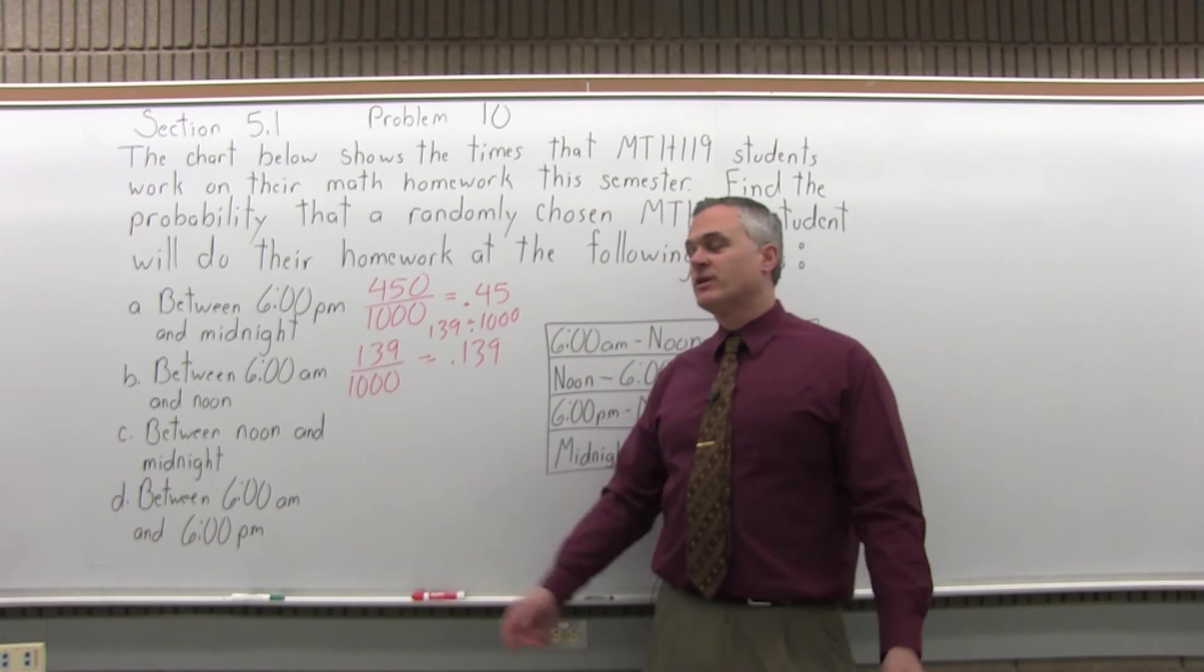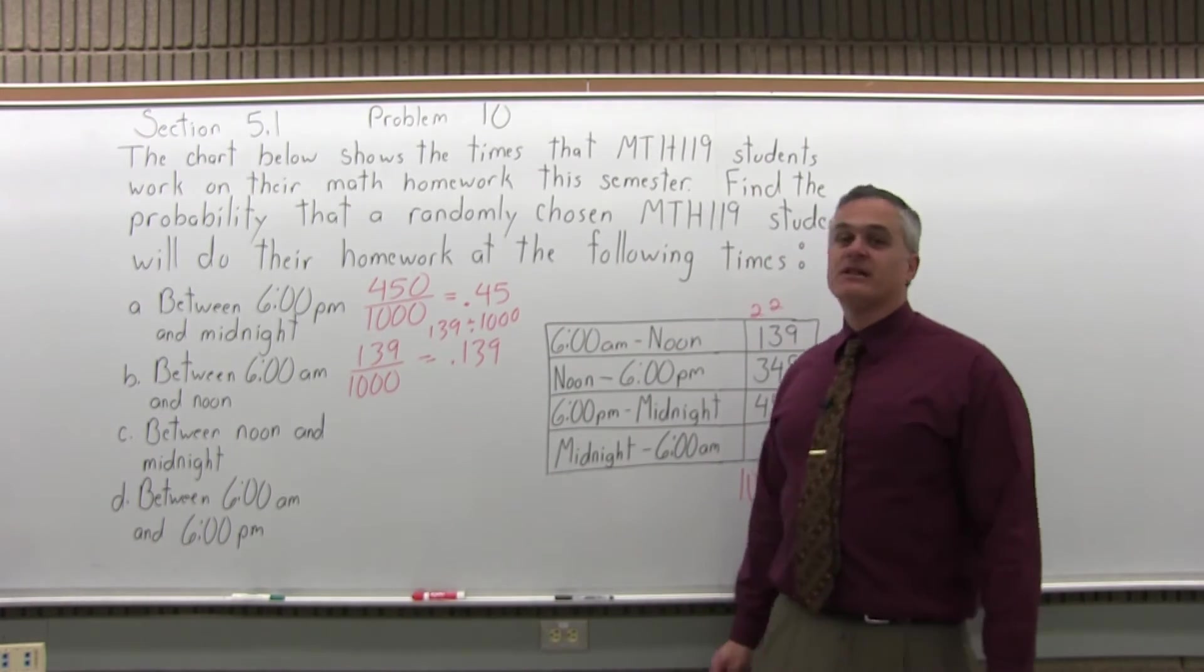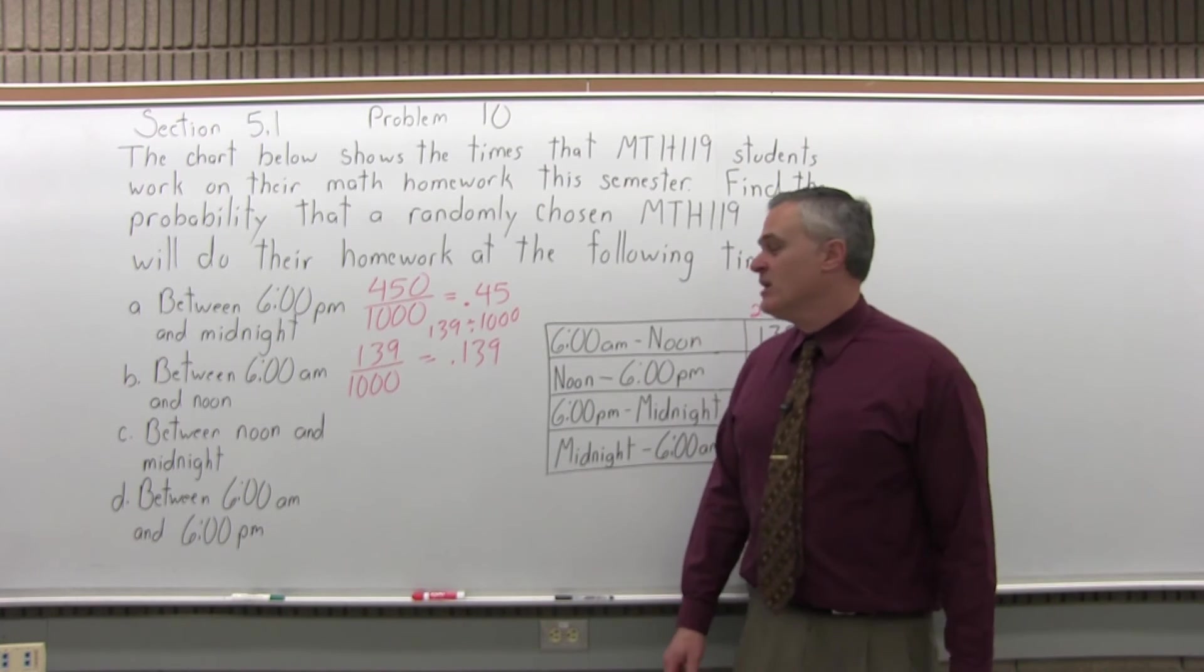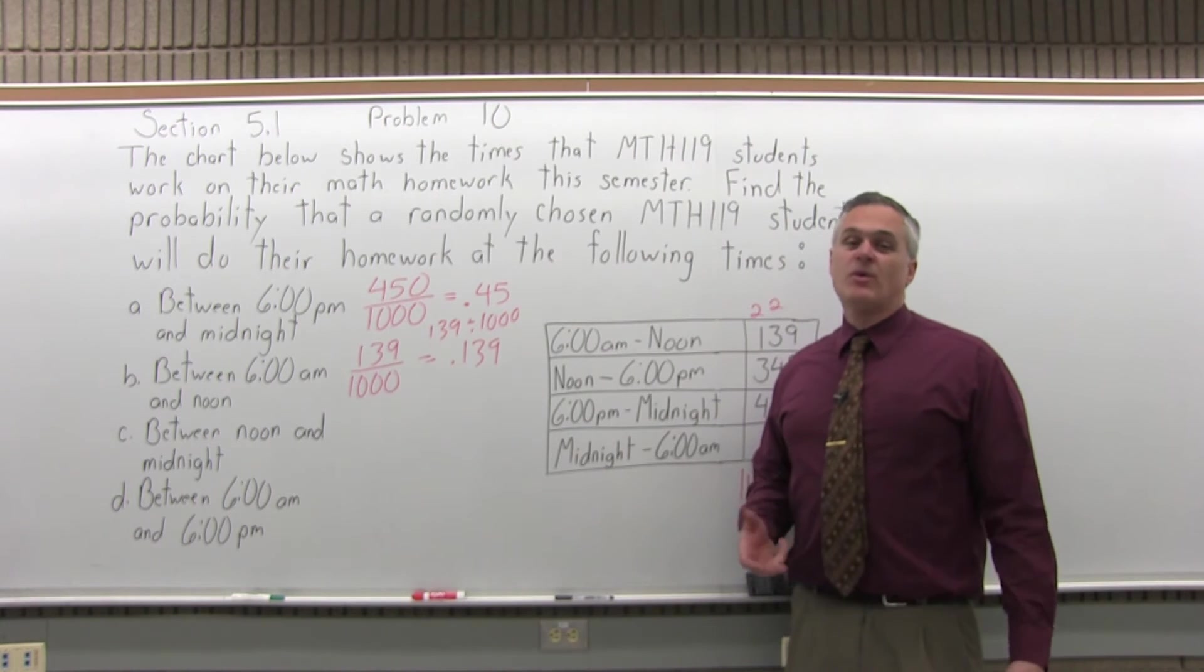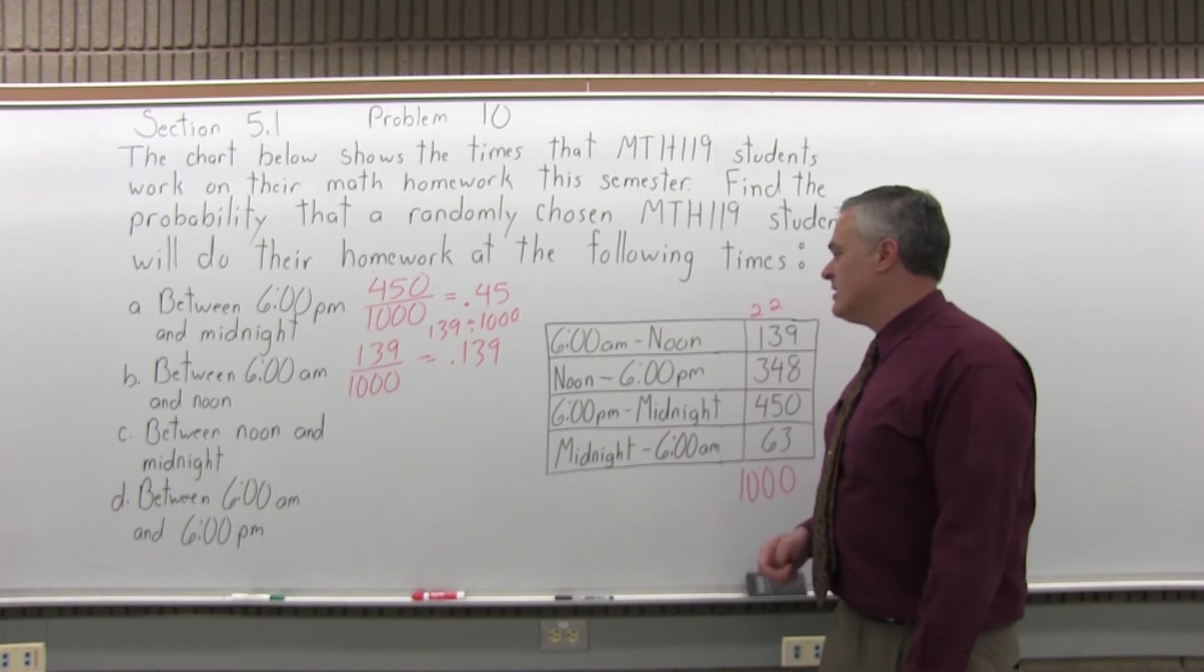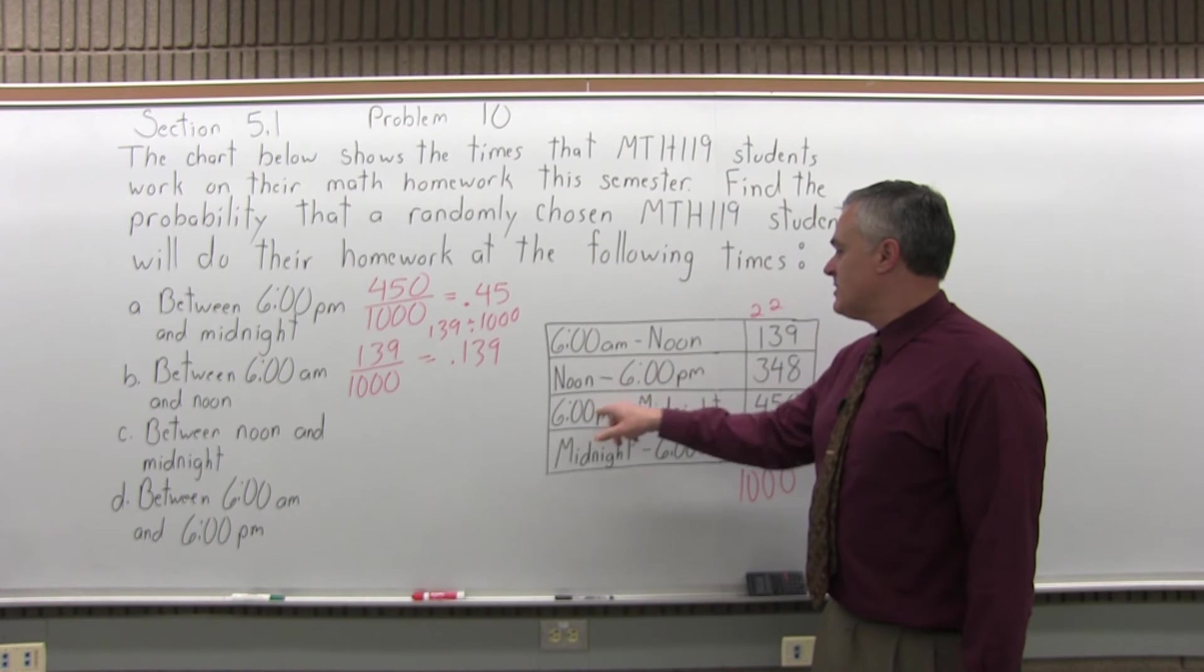What's the probability that a randomly selected Math 119 student does their homework between noon and midnight? Well, none of the intervals are labeled between noon and midnight, so what we have to do is add two intervals together. So we go from noon to 6 p.m. and 6 p.m. to midnight.